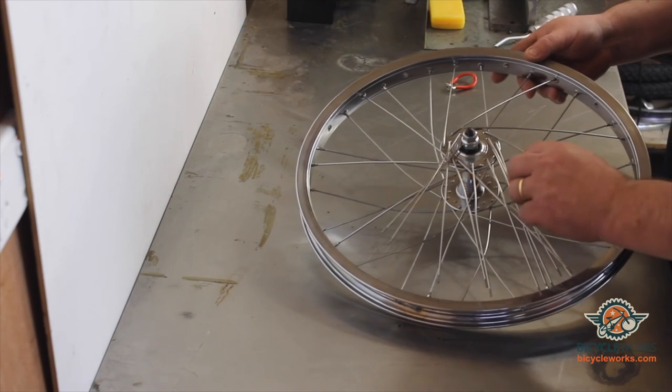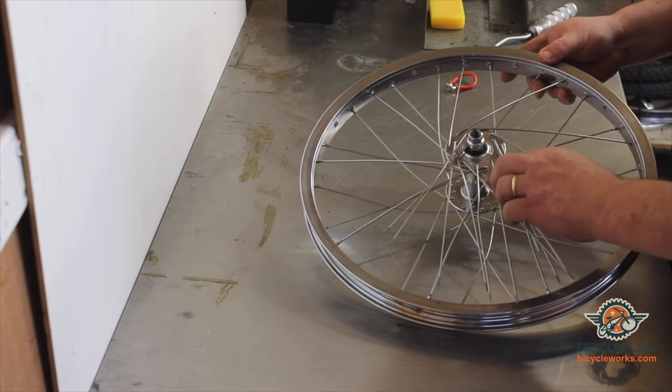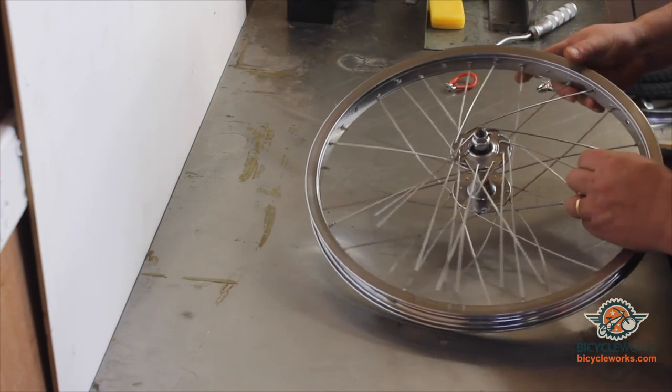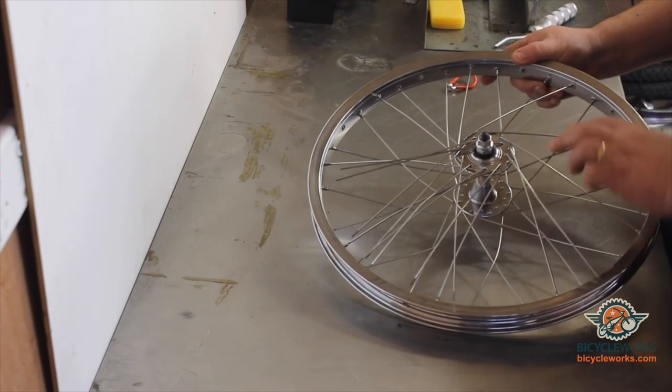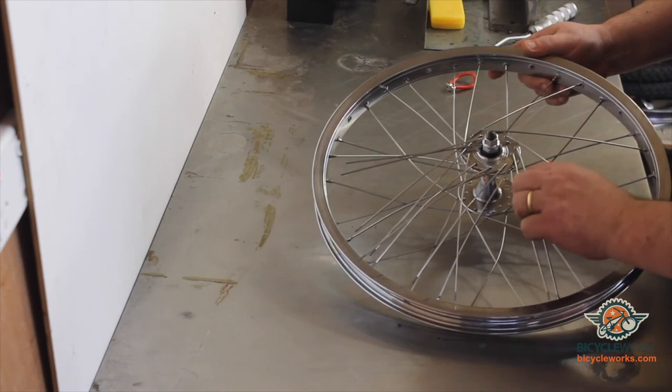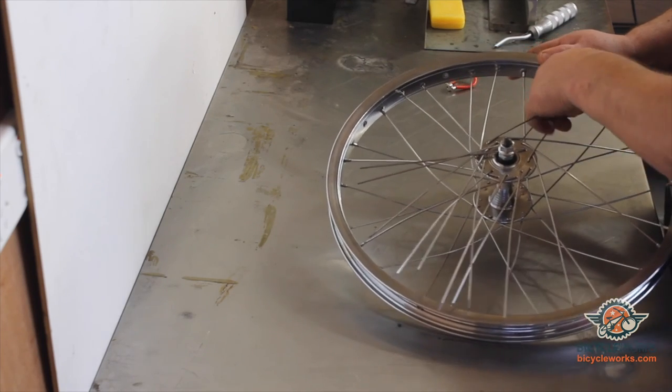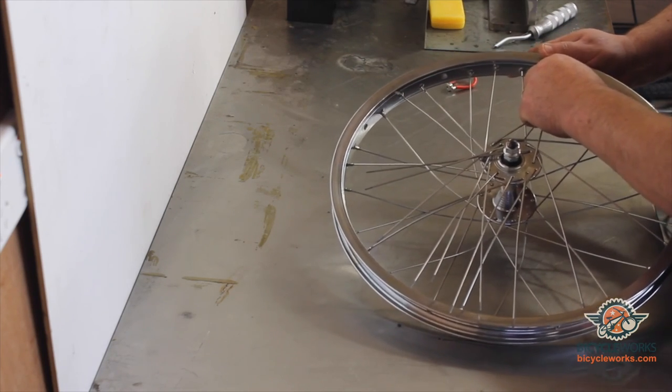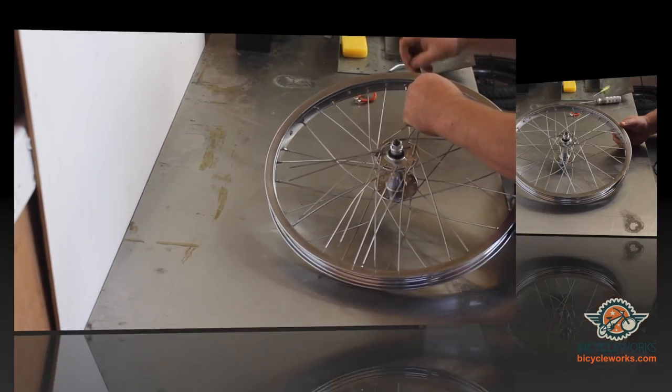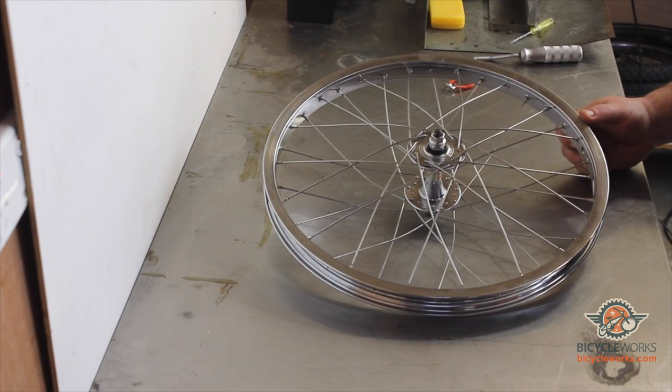Okay, now we've got the last group of spokes in. It's just as simple as following the original pattern, going over two spokes under one and in the vacant hole. So I'll do that with the first spoke. And then follow the pattern right around to the end. There we have a correctly built super lace.